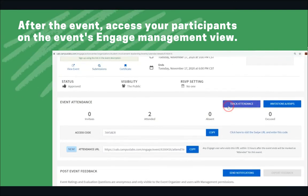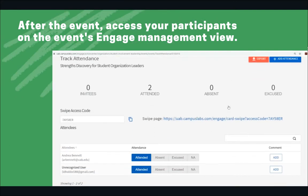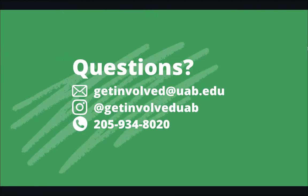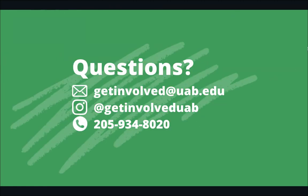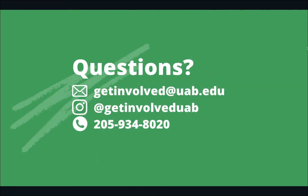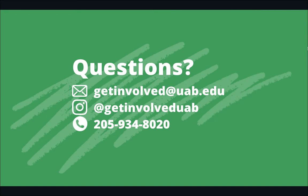Click Track Attendance. If you want to export your event list, click Export. If you have questions about the Engage event check-in process, please contact the Office of Student Involvement and Leadership at getinvolved@uab.edu.